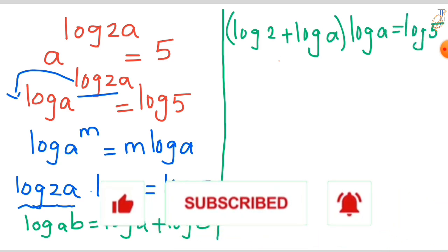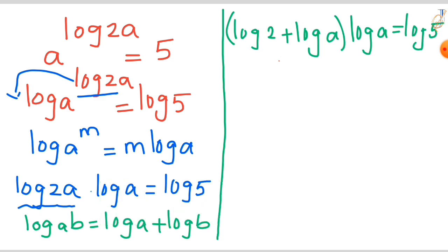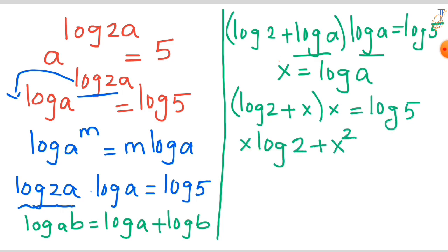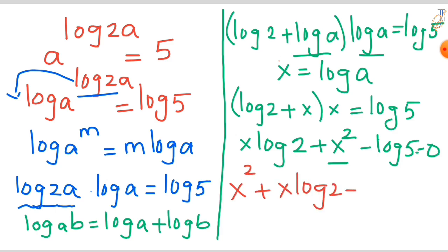It seems a bit difficult to solve log 2 plus log a times log a equals log 5 directly, so let x equal to log a. Then our expression turns into (log 2 + x) times x equals log 5. Expanding this: x·log 2 + x² minus log 5 equals 0, giving us x² + x·log 2 minus log 5 equals 0.